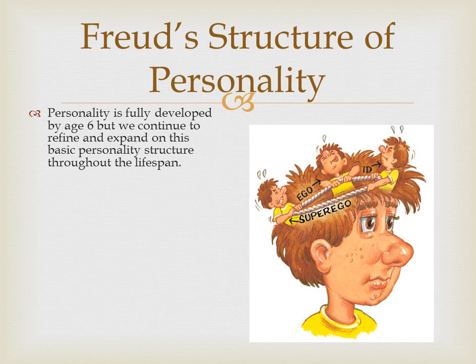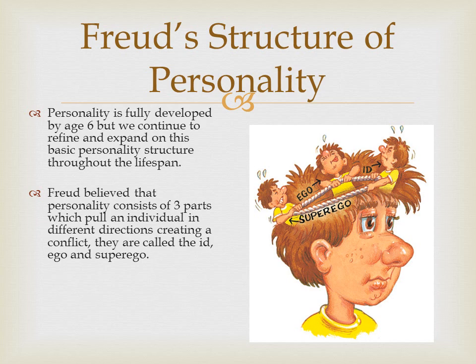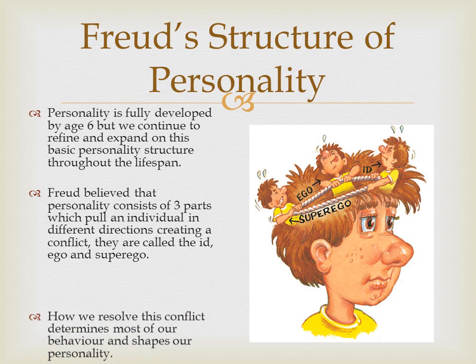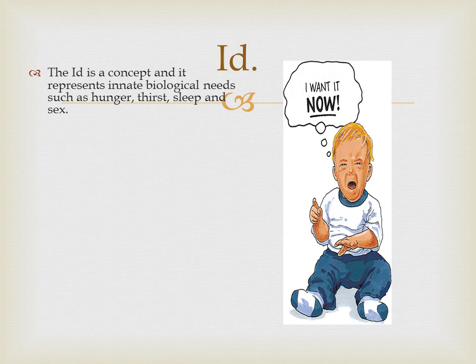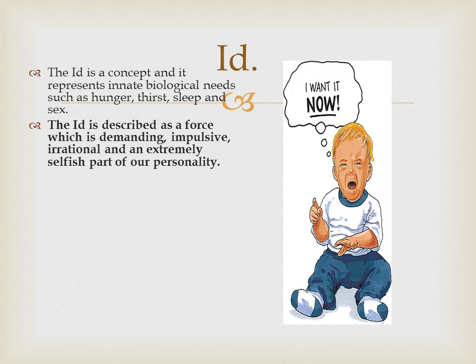Freud's structure of personality: personality is fully developed by the age of six, but we continue to refine and expand our basic personality structure through the lifespan. Freud believed that personality consists of three parts which pull an individual in different directions, creating a complex. This is called the id, the ego, and the superego. How we resolve the complex determines our behaviors and shapes our personality.